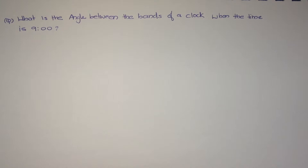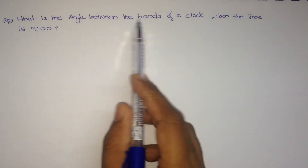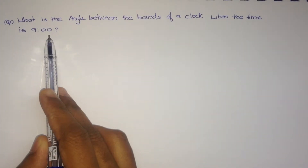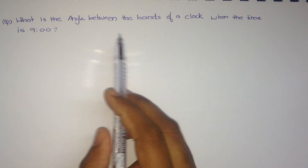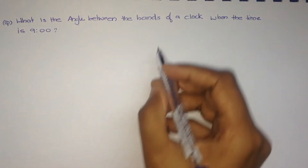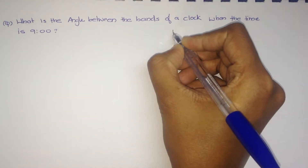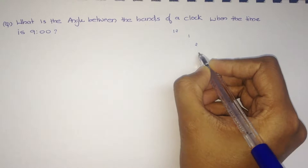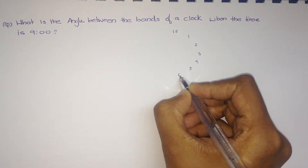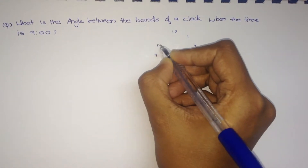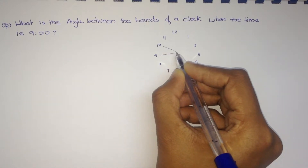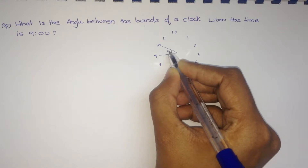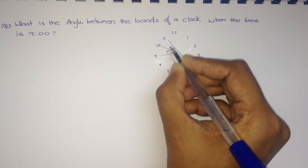Hi friends, today we are going to discuss an aptitude problem on clocks. Here we have to find the angle between the hands of the clock at 9, that is the angle between the minute hand and hour hand. First of all, we can simply identify the angle by drawing the model of the clock: 12, 1, 2, 3, 4, 5, 6, 7, 8, 9, 10. The angle between each hour marking — between 9 and 10, between 10 and 11, between 11 and 12 — will be 30 degrees each.